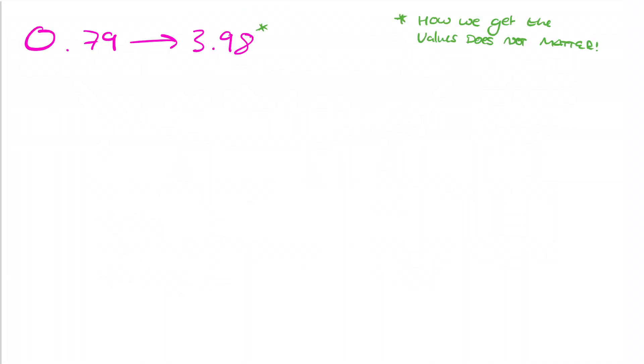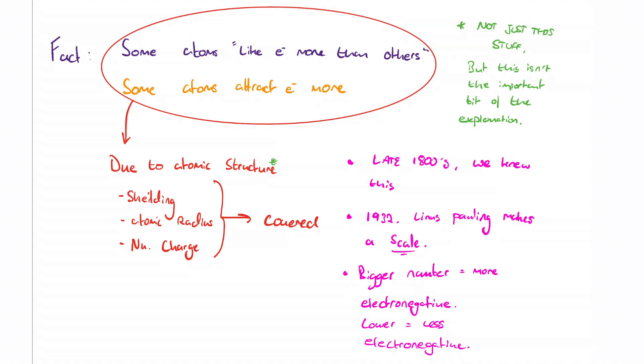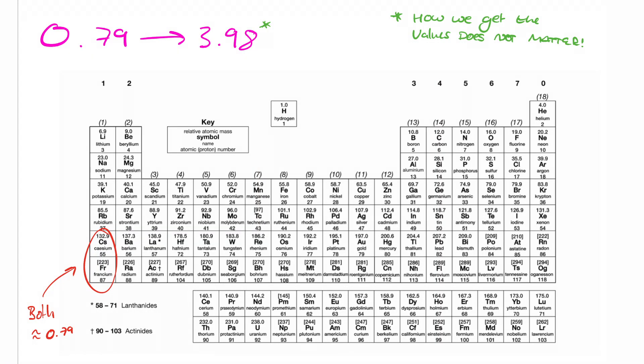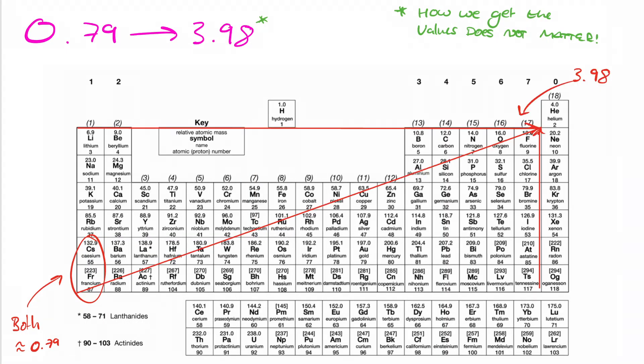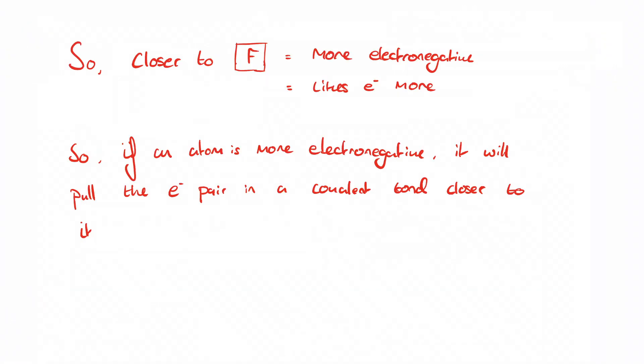He developed a scale. The lowest value on the scale is 0.79, and the highest is 3.98. Every atom's assigned one of these numbers, and the higher the number, the higher the electronegativity of an atom. The lowest value, 0.79, is assigned to cesium. It's in the bottom corner of the table. 3.98 is fluorine's electronegativity value. And in general, the closer you get to fluorine, the more electronegative an atom is.